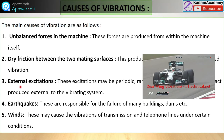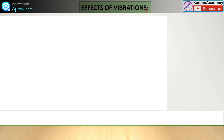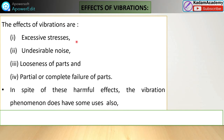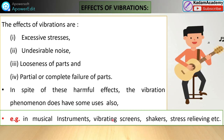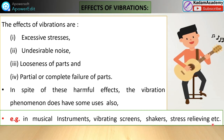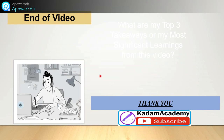In summary, causes of vibration include unbalanced forces, dry friction, external excitation, earthquakes, and winds. The effects of vibration are: excessive stresses developed inside body parts due to sudden forces; undesirable noise; looseness of parts causing breakage or removal; and complete failure of parts. In spite of these harmful effects, vibration also has uses such as musical instruments, vibrating screens, shakers, and stress relieving.